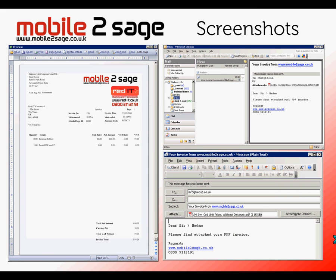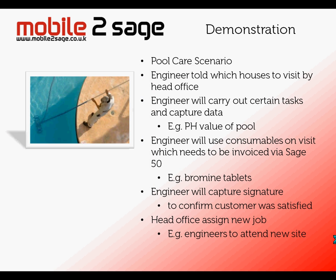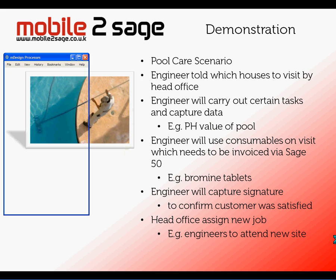The objective is to produce an invoice in Sage, and here's a Sage 50 invoice which can then obviously be PDF'd and emailed off. So the scenario is this: we have an engineer or set of engineers on the road, and the head office decides their schedule and sends those out to the mobile device of the engineer. The engineer attends the site, carries out various tasks like checking the pH value of the pool, uses consumables during his visit that need to be invoiced out, gets the customer to sign off, and head office then invoices that out using Sage 50 and assigns him further jobs.